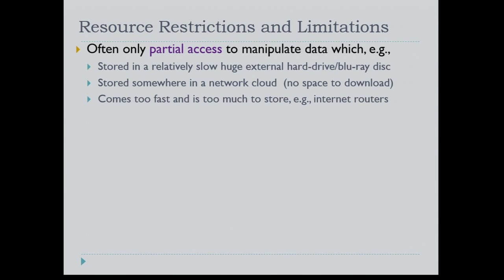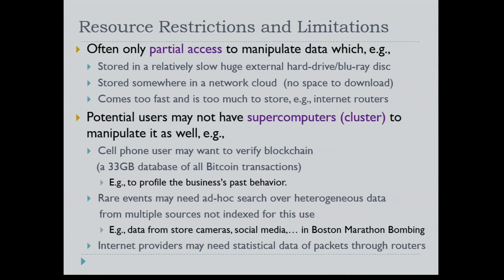Often we have only partial access to manipulate this data. This partial access may arise because the data is stored on a relatively slow but huge external hard drive, or it might be stored in a network cloud and we don't have space to download it all, or the data may be arriving too fast to save or store — like in internet routers, which was a real problem at AT&T.